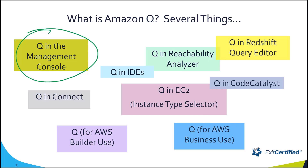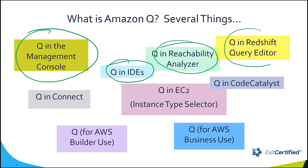There's also a Q add-in for the AWS toolkits in various IDEs like Visual Studio Code. This allows you to highlight some code and ask Amazon Q to explain what it does, or to flag any security risks. On the networking side, in the network reachability analyzer, there's Q support so you can ask for help with network puzzles. And if you're using the Redshift query editor, there's now a SQL generator built in that knows about your tables and structures.